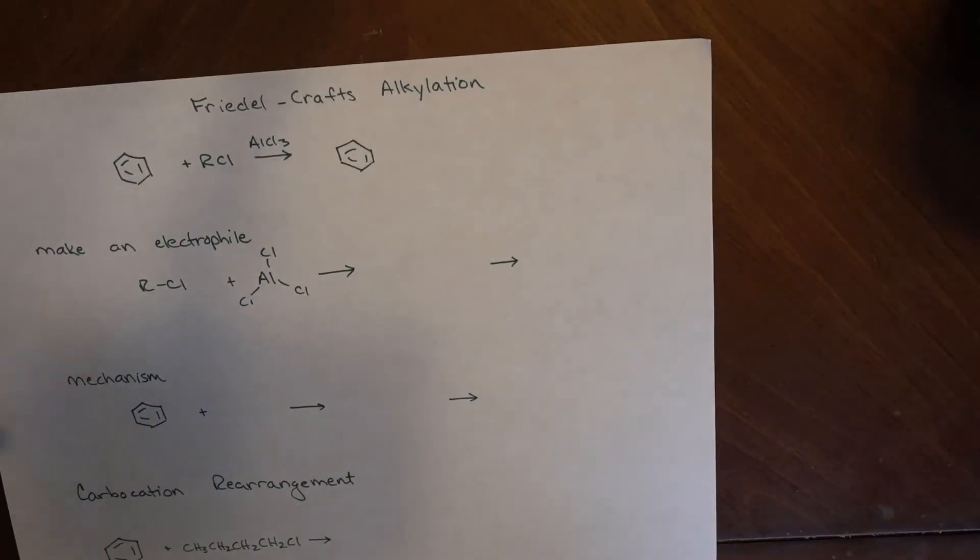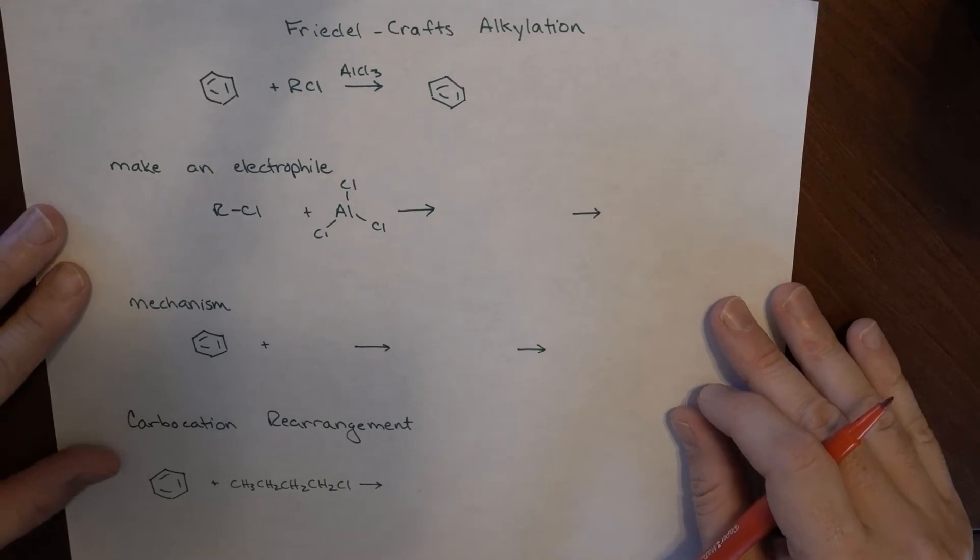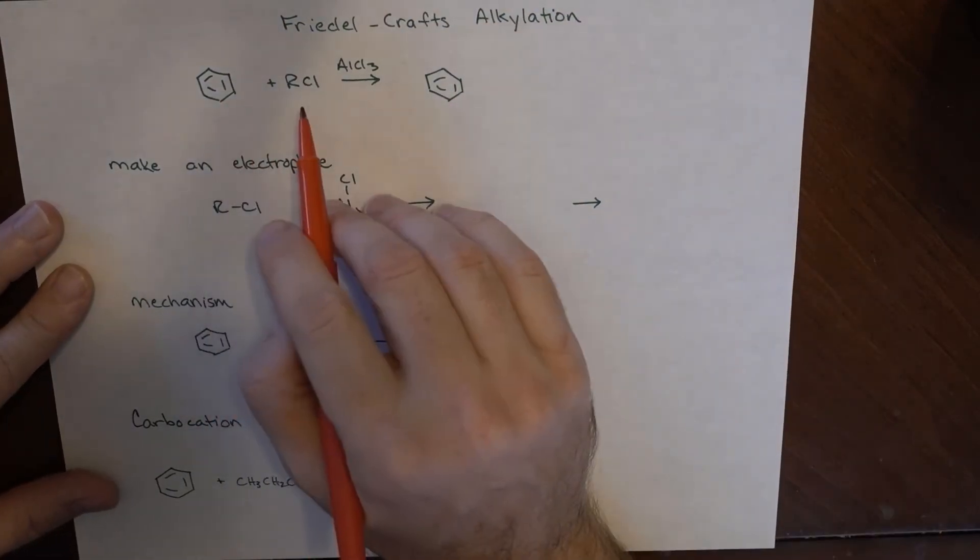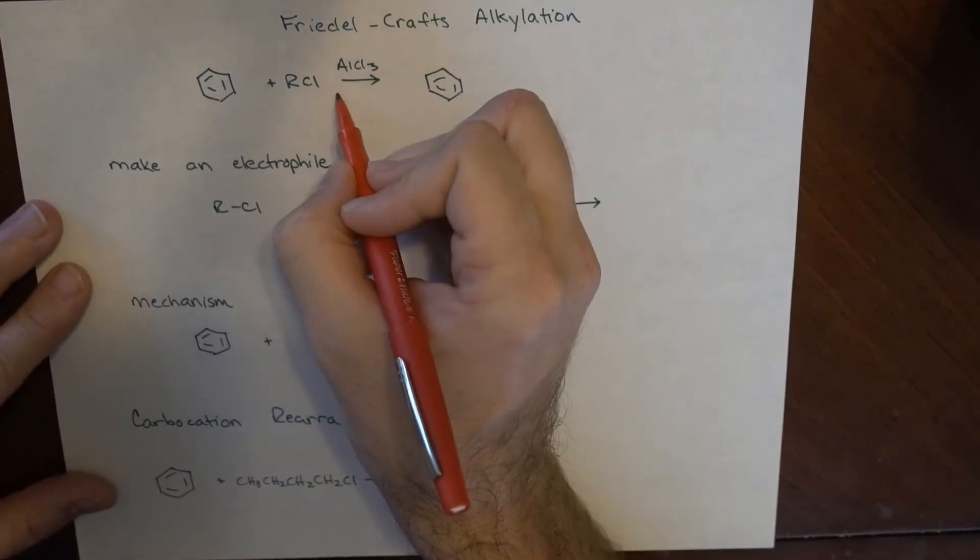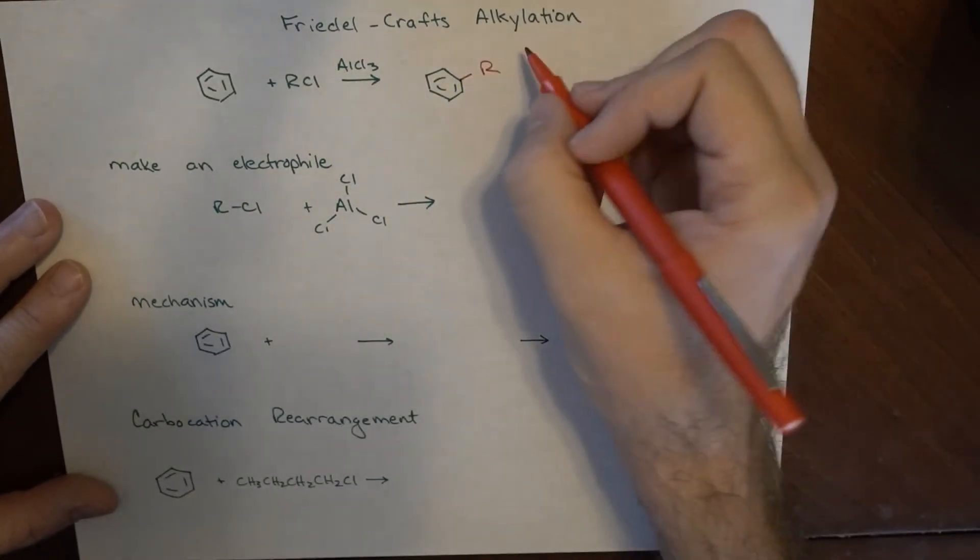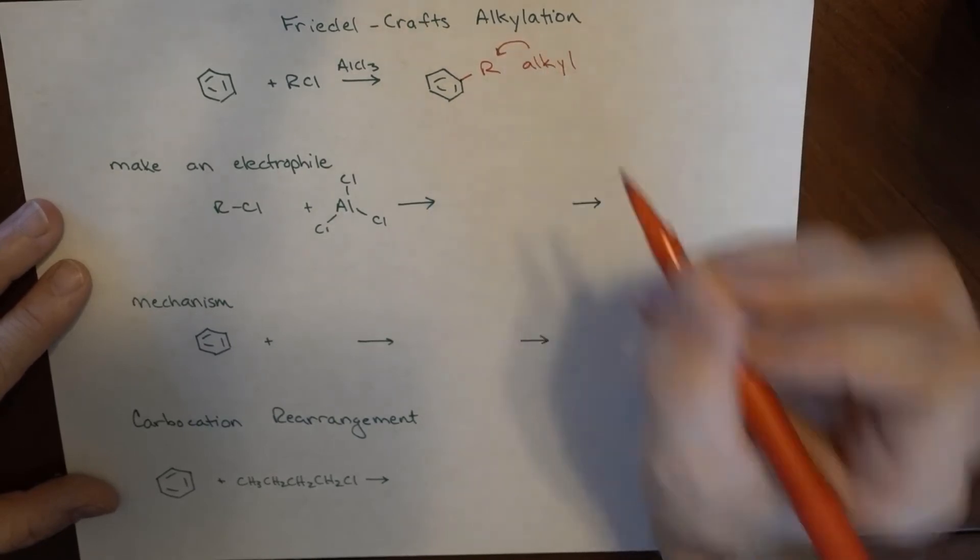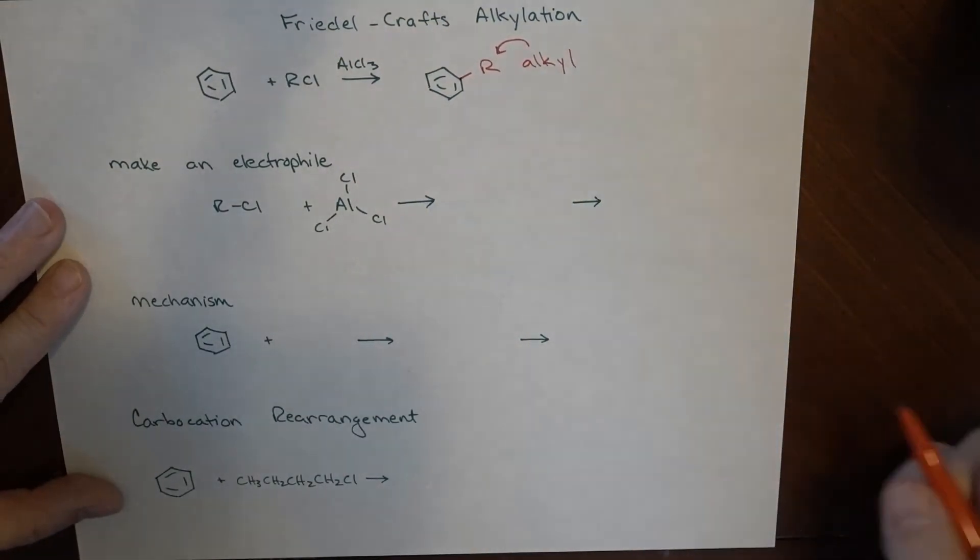There is also an alkylation reaction that things can undergo. And so what we have here is benzene plus some alkyl halide in the presence of aluminum chloride to add an R group right here. So we've added an alkyl group onto the benzene ring. And just like all the others, this starts with making an electrophile.